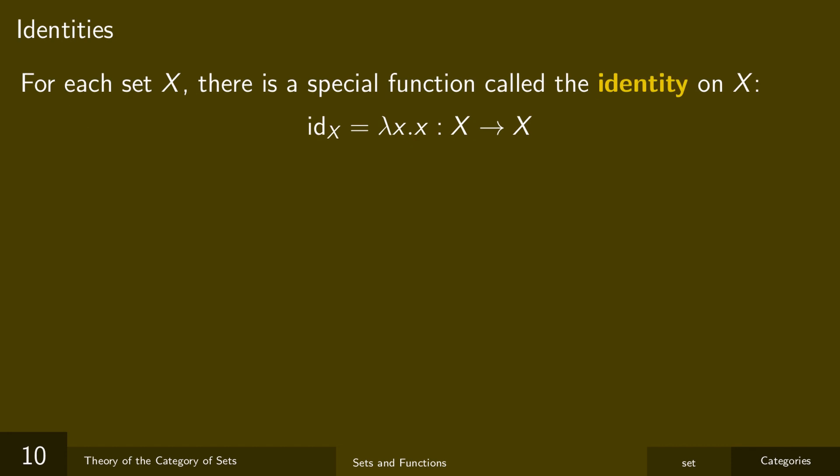Here's another basic thing we can define, the identity function. This is a function with the same domain and codomain, which takes an element and just returns that element. The notation lambda x dot x says that it takes in x, which is an element of the set X, and returns it. We'll denote this function id_X, the subscript X indicates that there's one of these functions for every single set X. Identity functions and compositions are going to be the key elements defining the category of sets.